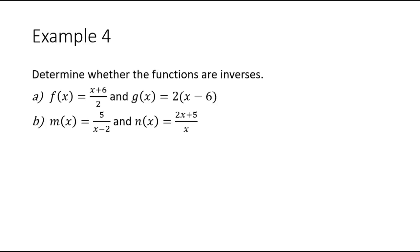Example 4: Determine whether the functions are inverses. f of x is equal to x plus 6 divided by 2, and g of x is equal to 2 times the quantity x minus 6. In order to determine whether two functions are inverses of one another, we find f of g of x and g of f of x. If both simplify down to x with everything else canceling out, then the two functions are inverses of one another.